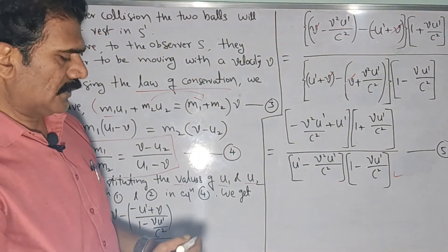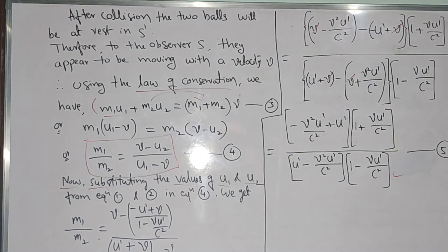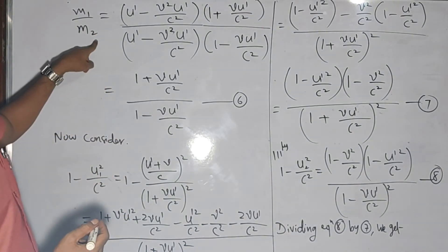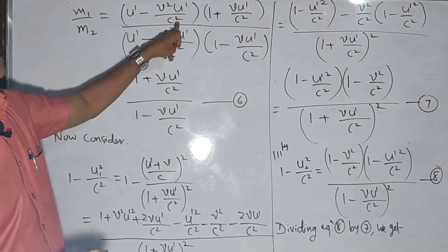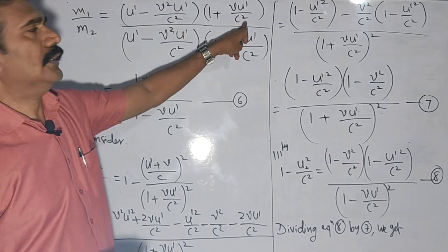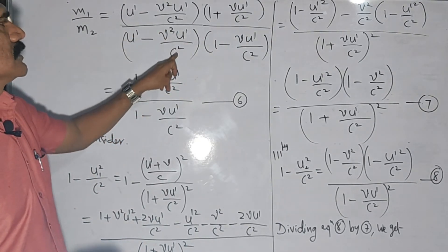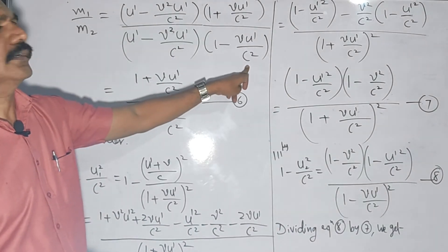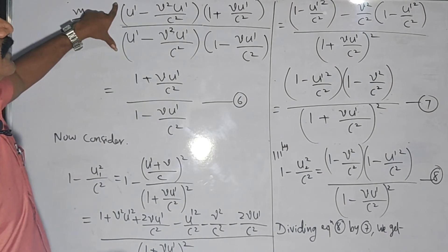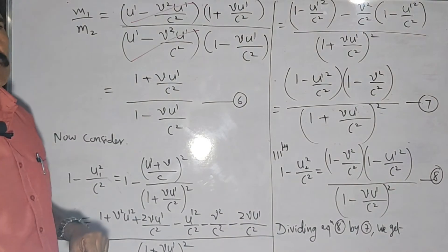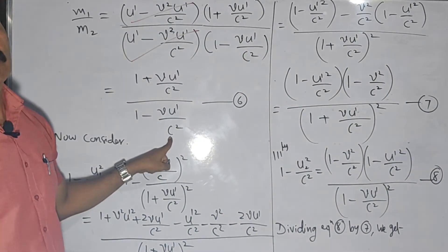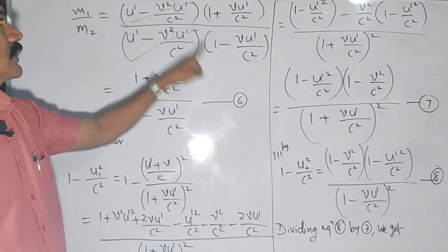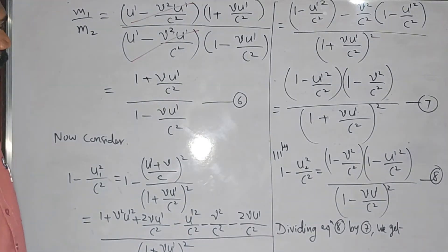Rewriting equation 5, M1/M2 equals [U'(1 - V²/C²) · (1 + VU'/C²)] / [U'(1 - V²/C²) · (1 - VU'/C²)]. The common term U'(1 - V²/C²) cancels from numerator and denominator, leaving equation 6: M1/M2 = (1 + VU'/C²) / (1 - VU'/C²).